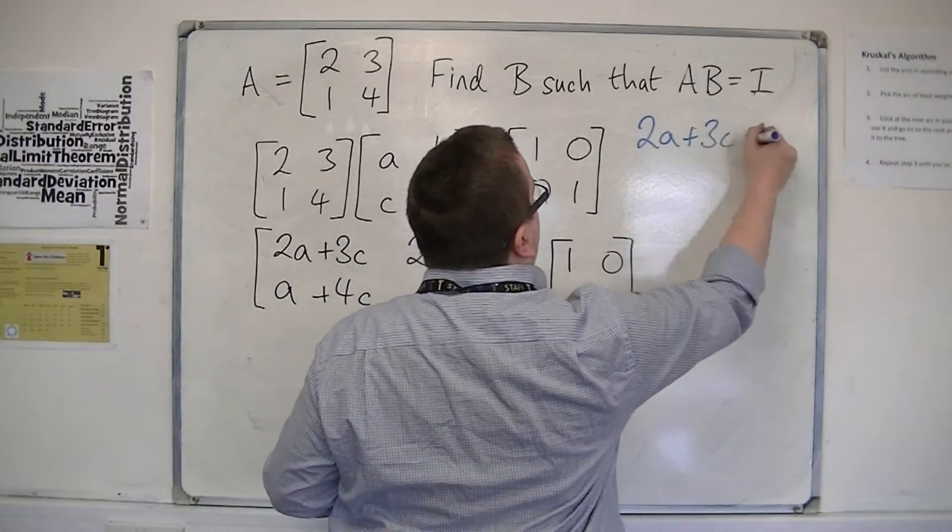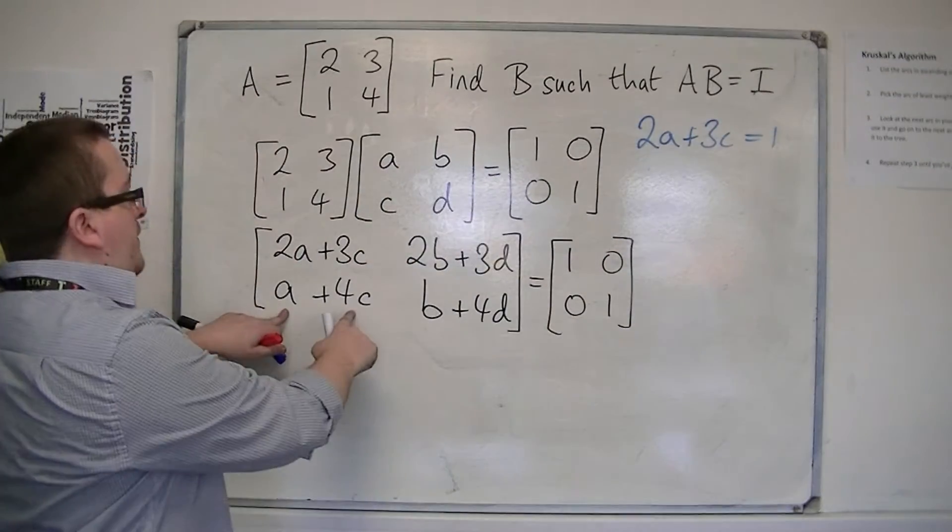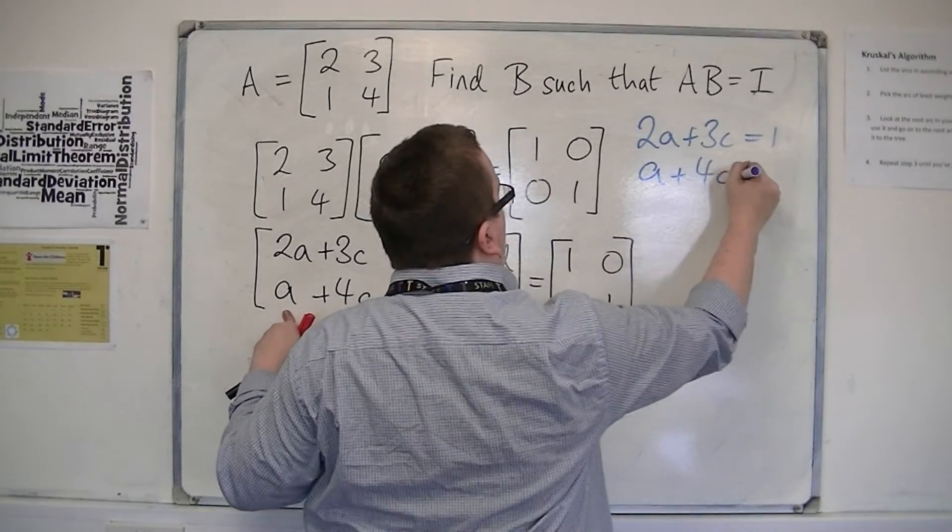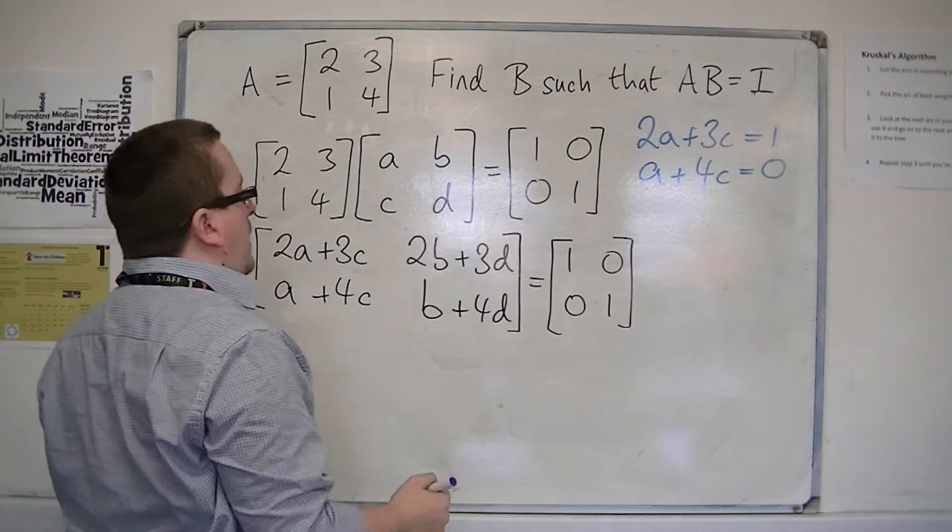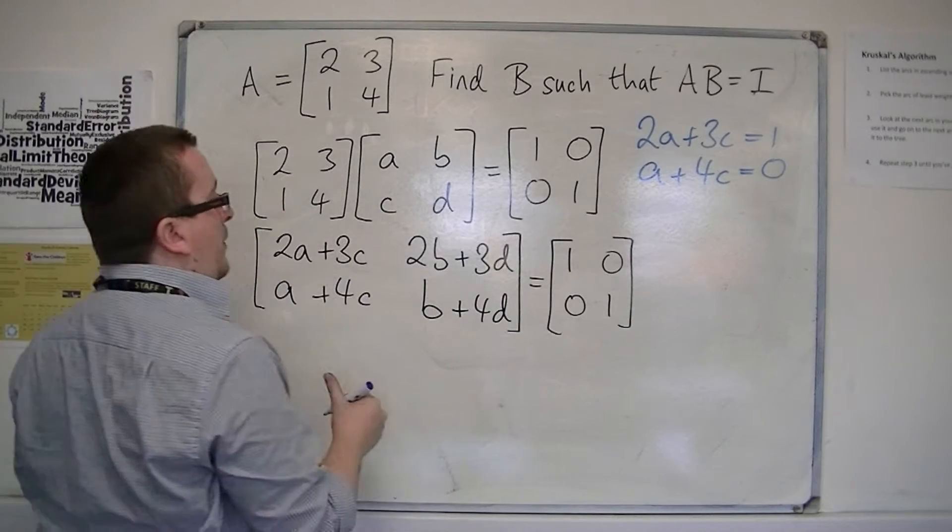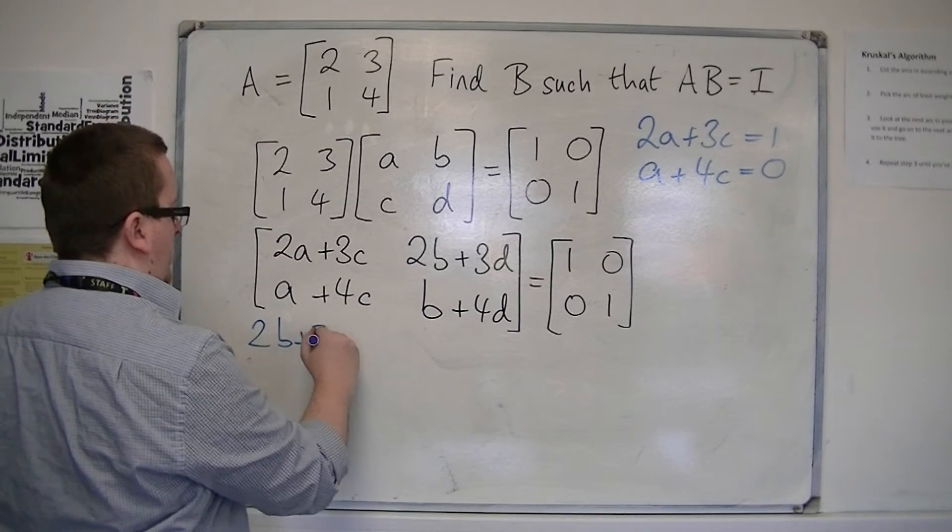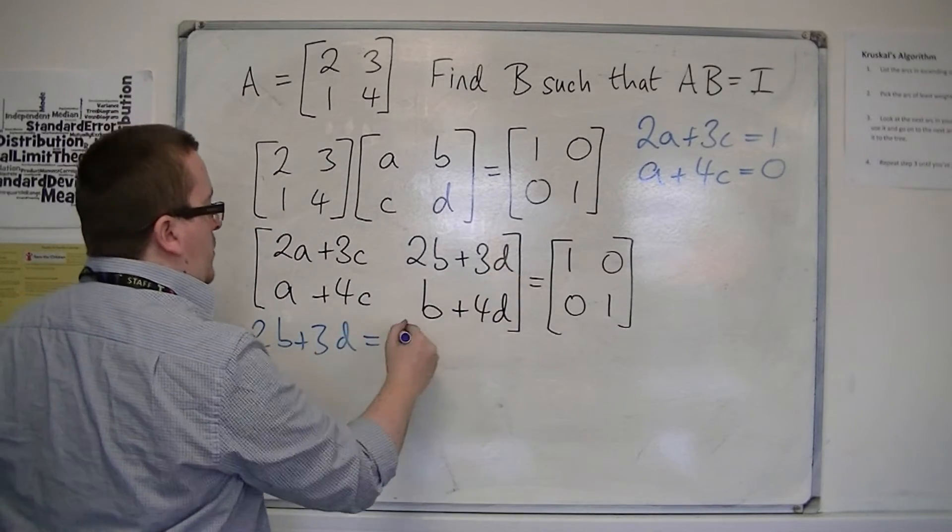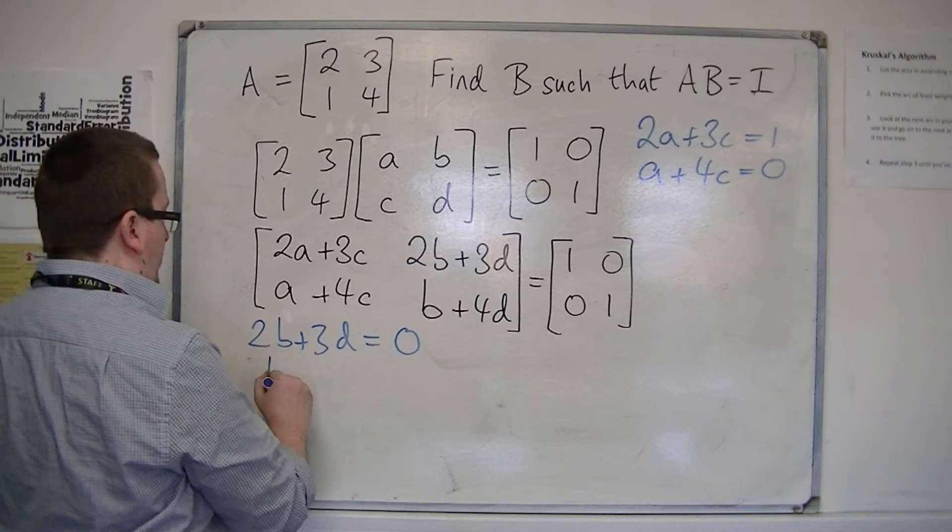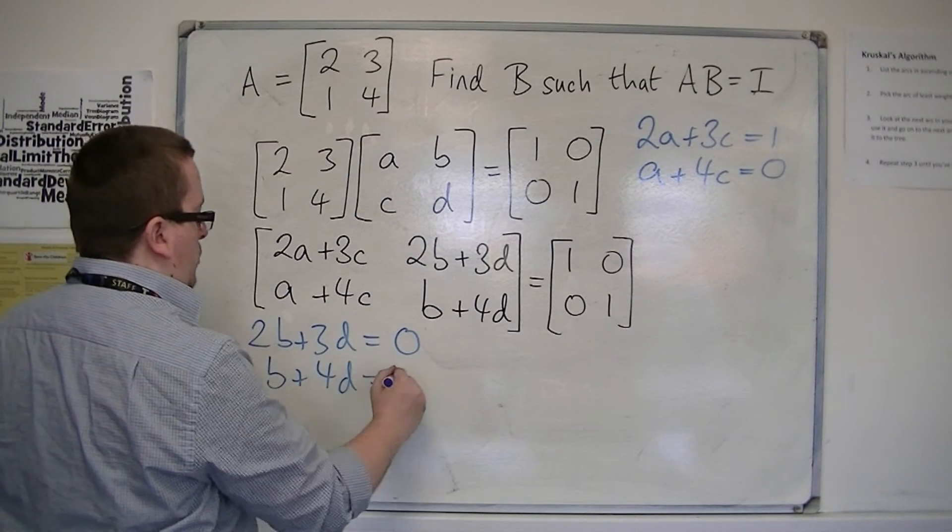I must also have that a plus 4c is 0. I've got 2b plus 3d is equal to 0, and b plus 4d is equal to 1.